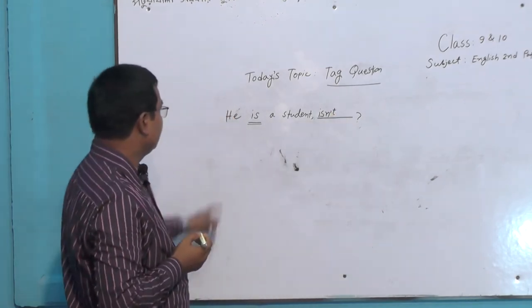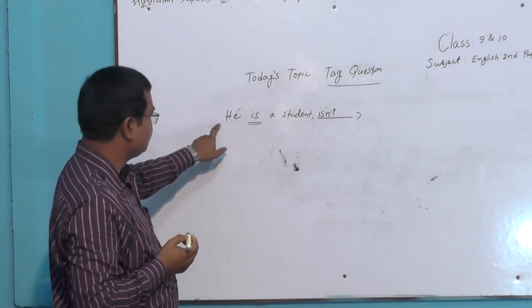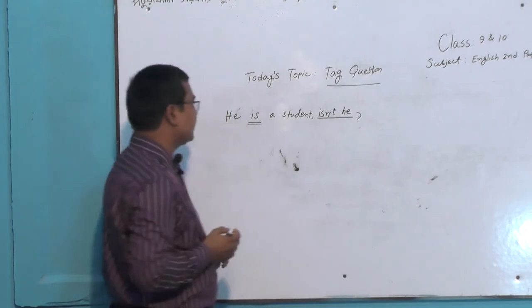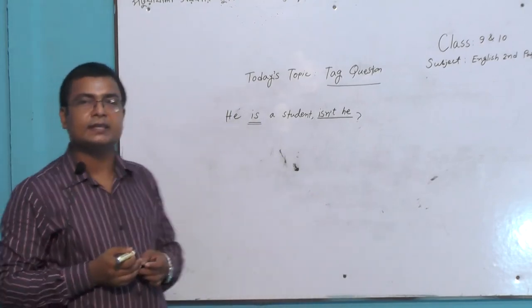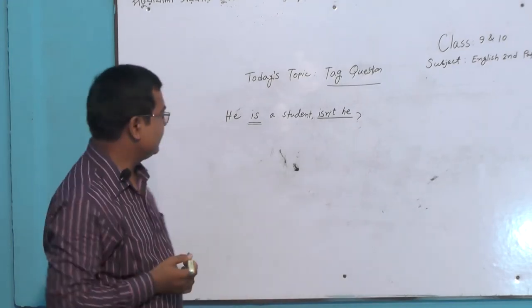'Isn't', then the pronoun of the subject. Here it is pronoun so we will write it. So the tag question is 'isn't he'. Dear students, have you understood?